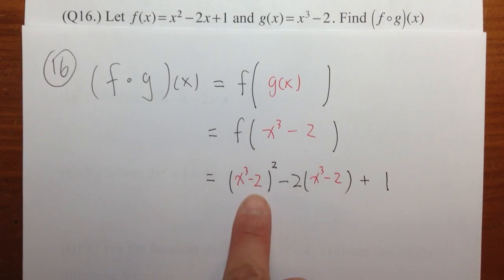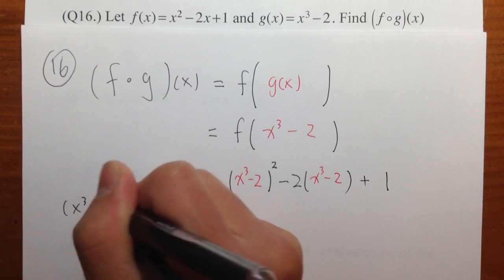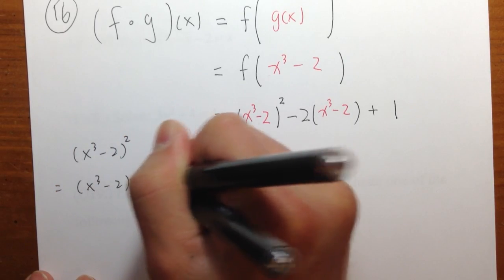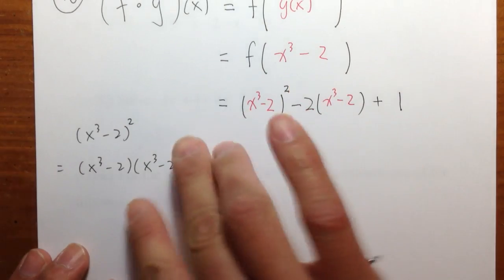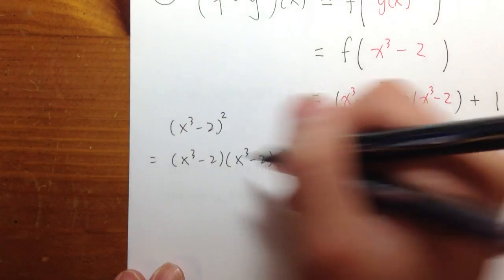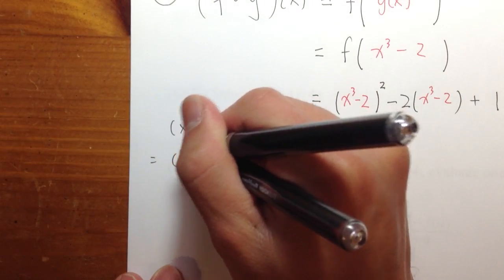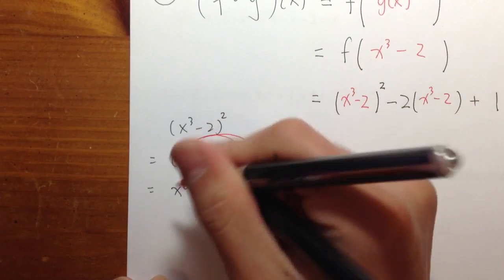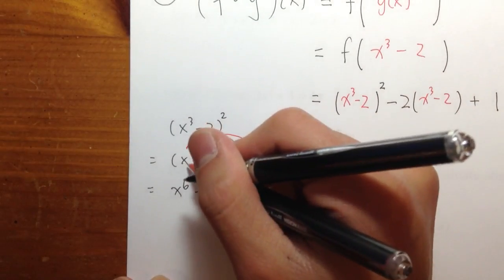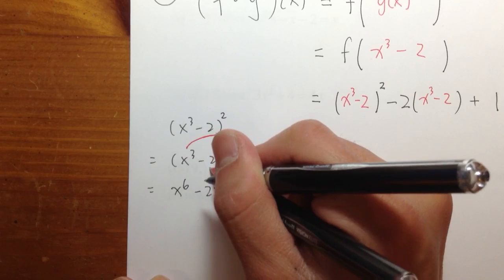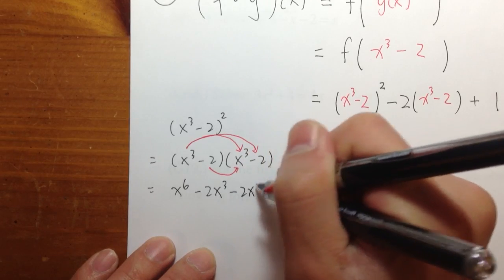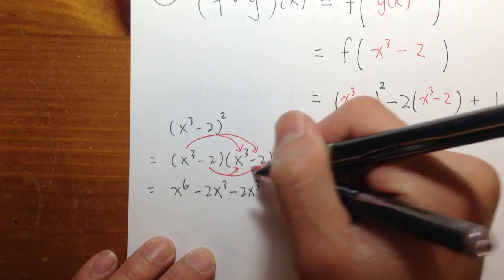Let's take a look at this part and do this on the side. We have x to the third power minus two, raised to the second power. This means we have x to the third power minus two, times x to the third power minus two. We take x to the third power times x to the third power — that will produce x to the sixth power, because we add the exponents when we multiply. Then we have x to the third power times negative two, that's minus two x to the third power.